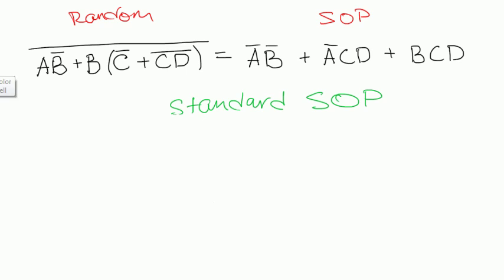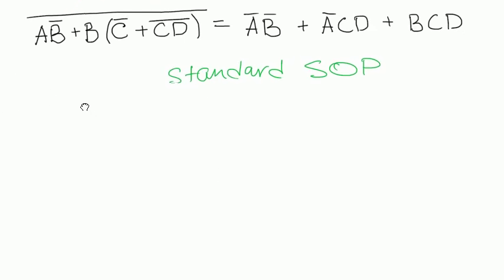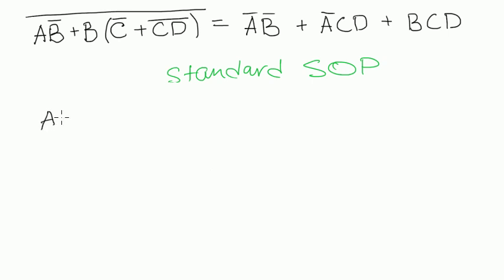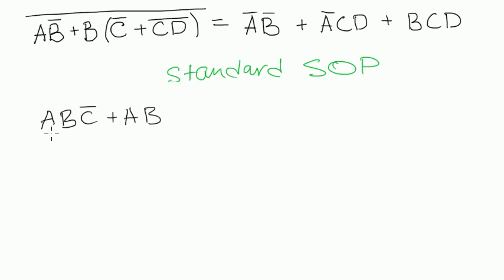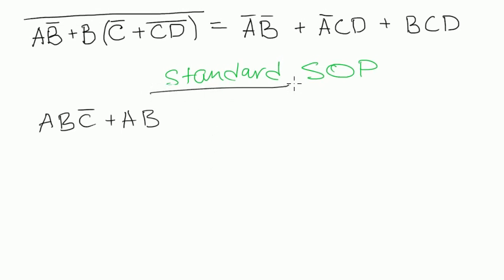It may look a bit tricky, so we will start with a simple example. Let's say we have a very simple expression: ABC̄ plus AB. As you can see, this is a sum of products form because we have a sum of two products. But it's not the standard sum of products form. The standard sum of products form is a form where each product has all the variables that appear in the expression.